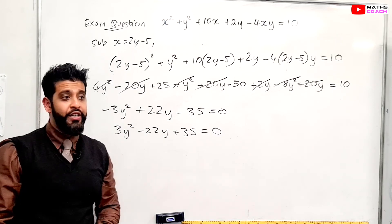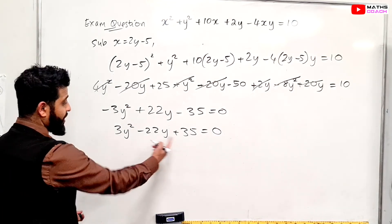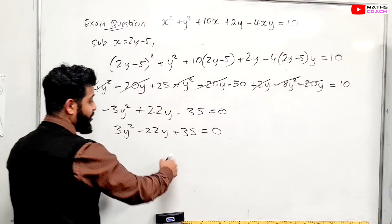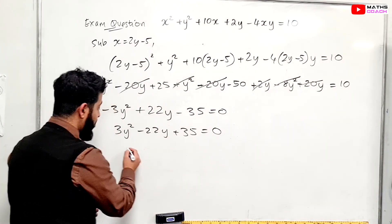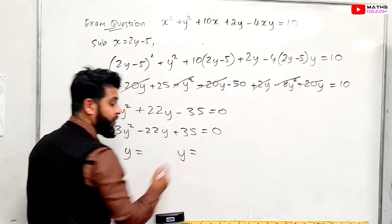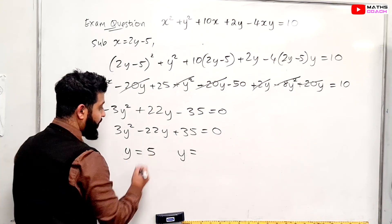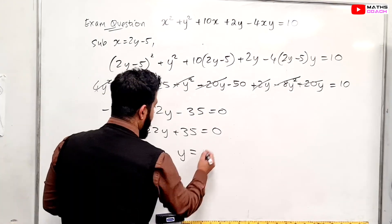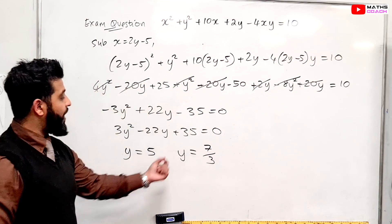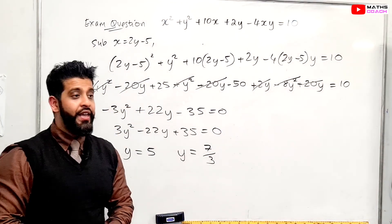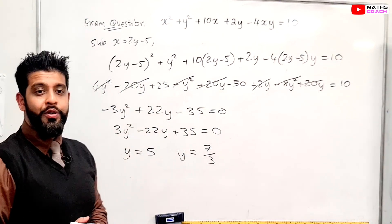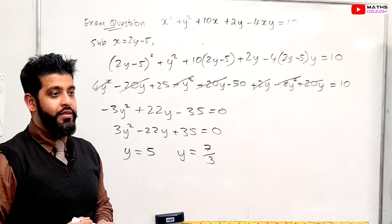Making everything positive by multiplying through by -1 gives 3y² - 22y + 35 = 0. You've got a quadratic — you can use your calculators or double brackets to solve it. The two values are y = 5 and y = 7/3. Those are your values of y, as required for part b.